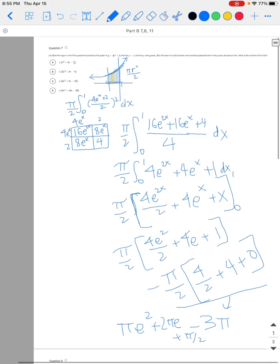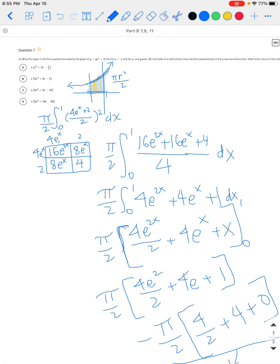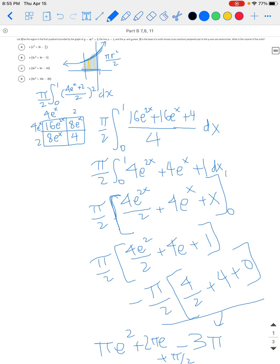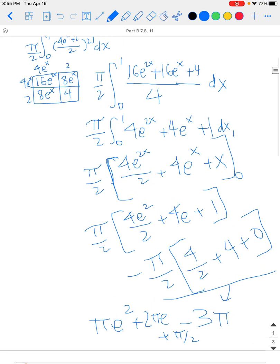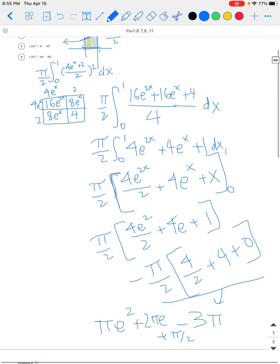But of course in your answer choices, your π is factored out. So let's factor out that π. So you have π times, in parentheses, e^2 + 2e. And then there's a minus 3, but then there's plus a half. So minus 3 plus a half is minus 5 halves.